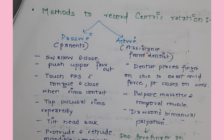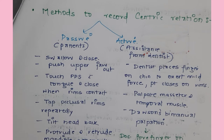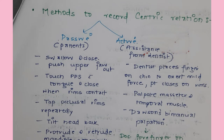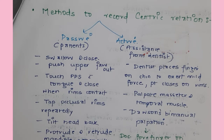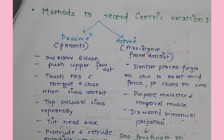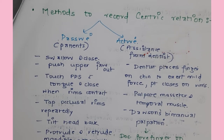Methods to record centric relation are frequently examined. There are passive and active methods. In passive methods: ask the patient to swallow and close; insert occlusal rims and ask the patient to swallow and close; push the upper jaw out; ask the patient to take the tip of the tongue from the rugae area to the posterior palatal seal area and close when occlusal rims contact; tap the occlusal rims repeatedly; tilt the head back and ask the patient to protrude and retract the mandible with a finger against the chin.